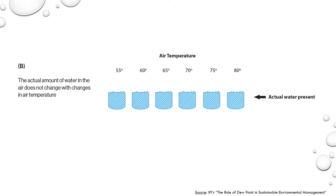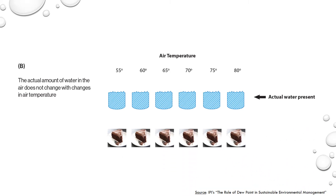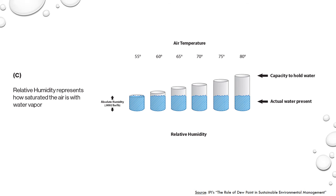Just like how the bodybuilder and the little girl ate the same amount of cake, the volume of water in the air is the same for each temperature — just changing the temperature alone does not change how much water is present in the air. When the two diagrams are combined, we can visualize how that same volume of water fills each of the different cylinders. Just like how the little girl was 90% full from that same amount of cake, the air at 55 degrees is full — it is at capacity. When the air is warmed to 60 degrees, there's a little bit more room left at the top of the cylinder. It has a slightly higher capacity to hold water. The air is 84% saturated with water, or we could say that the relative humidity at 60 degrees is 84%.